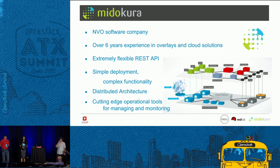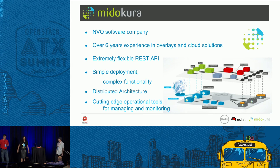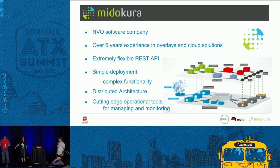MidoNet is a network virtualization overlay — a software agent residing on servers at the edge where all network intelligence lives. It has an extremely flexible API; we map the Neutron API to the MidoNet API, but we also go above and beyond to provide additional functionality and visibility. It's quite simple to deploy. This diagram depicts logical topologies that can be created through the OpenStack Neutron API.